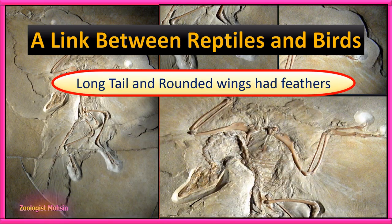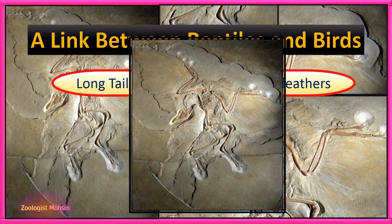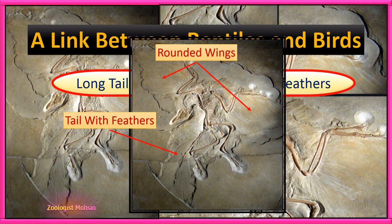Archaeopteryx had a long tail and rounded wings with feathers. A long tail is a basic feature of reptiles, while rounded wings with feathers are the unique characteristics of birds only. In the fossil, you can clearly see that the tail had feathers and wings are also present with feathers.